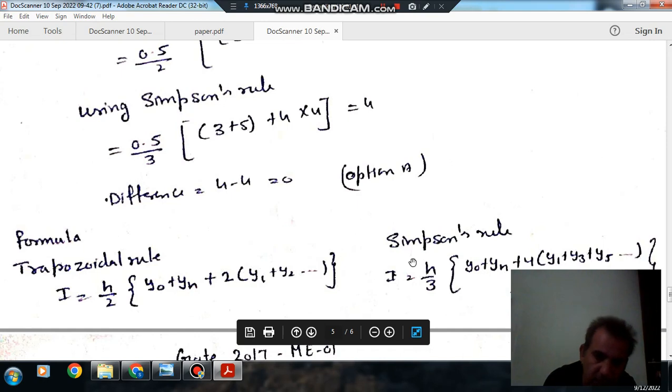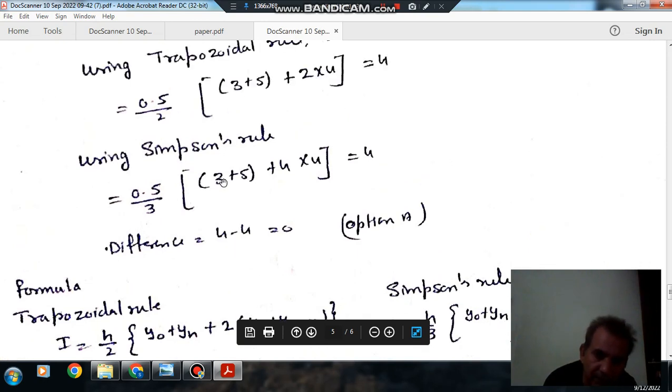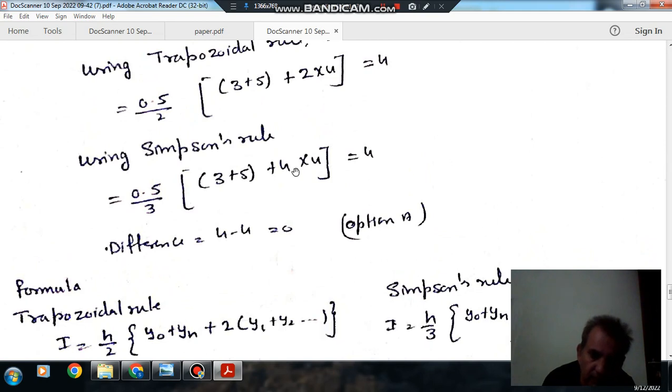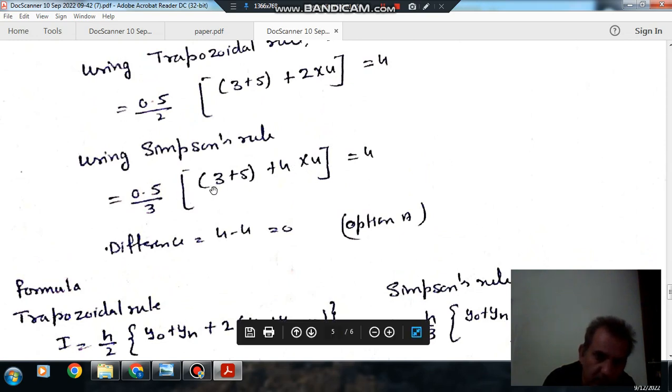So y₀ and yₙ are again 3 and 5, so 3 plus 5. And y₁ is 4, so it will be 0.5/3 into...